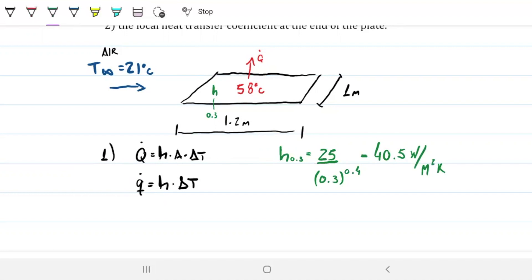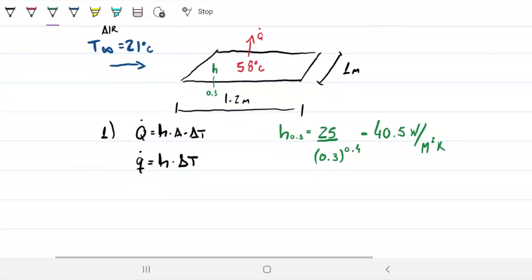And having that information now, how easy is that? Well, it doesn't really get much easier than this. Q dot will be 40.5 watts per meter squared Kelvin times the difference in temperature, which is 58 minus 21. And that's Kelvin or Celsius. So these units cancel. We're left with heat flux units. And this is 1,497 watts per meter squared.